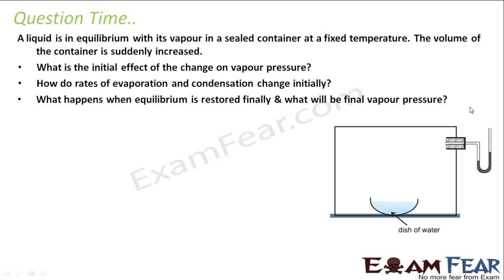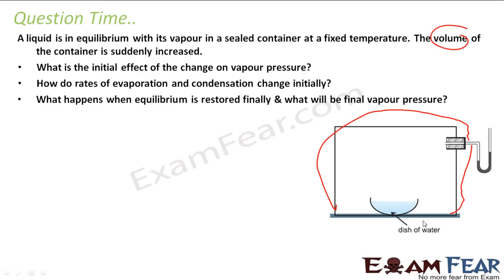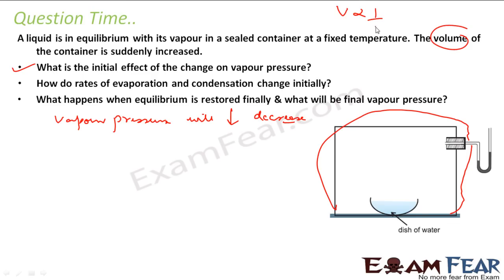Let's take the same container. We have this dish of water here and it is in equilibrium. Now the volume is increased — let's suppose it has become this big size. The first question asks about the effect on pressure. So pressure will decrease, because volume and pressure are inversely proportional. So increasing the volume, the pressure will definitely decrease.